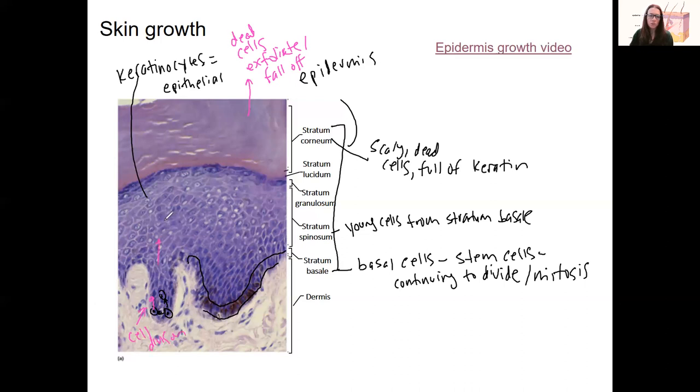That is going to continue to push up over time until the cells enter the stratum granulosum. The stratum granulosum is this dark layer right here. Granules of keratin are being produced. So here cells produce a bunch of keratin. Keratin is a protein.